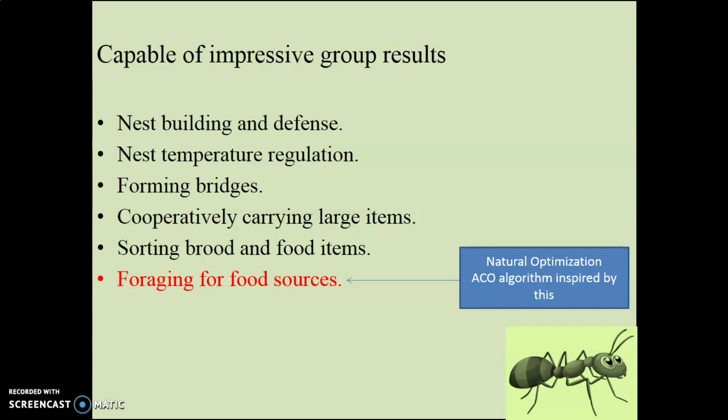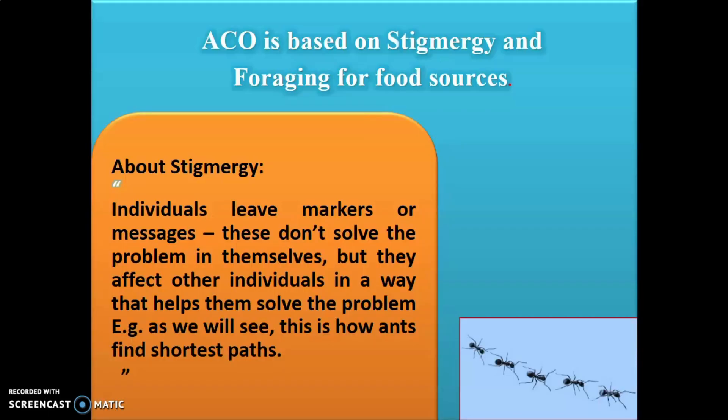Today we are going to discuss the ant colony optimization algorithm. The first thing is it is based on stigmergy and foraging for food sources. Foraging is when some swarms collectively search for their food — this behavior is known as foraging. This collective food-searching behavior of ants is what we call foraging.